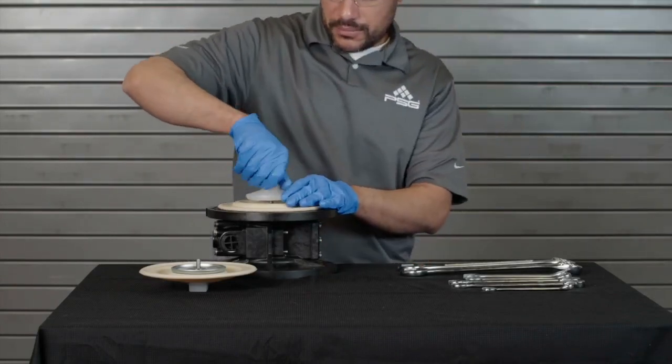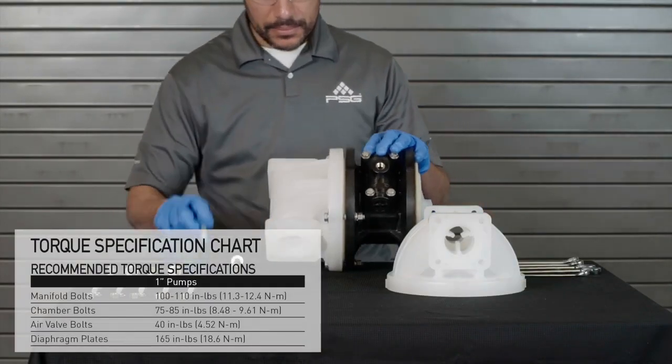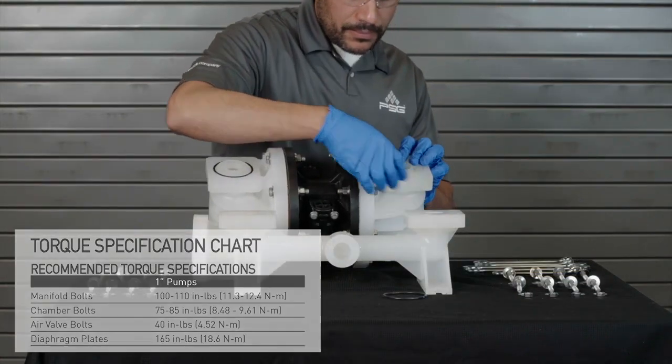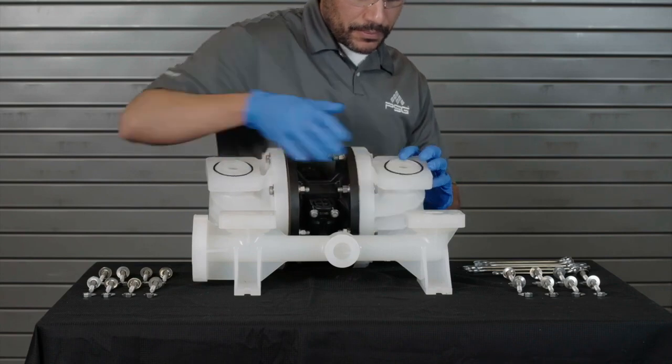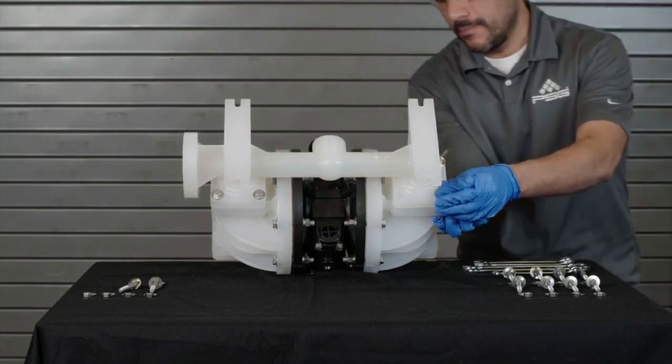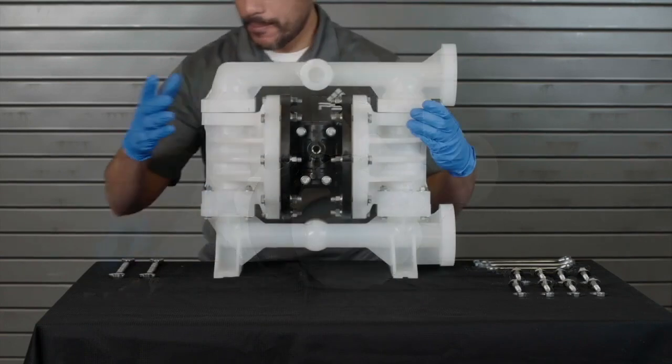Ensure all hardware is fastened in accordance with the torque specifications outlined in your A100 plastic pump manual. Always torque the chamber bolts prior to the manifold bolts. When reassembling, loosely tighten all external fasteners, adjusting and aligning gradually in an alternating fashion. Then you may tighten to torque requirements specified.